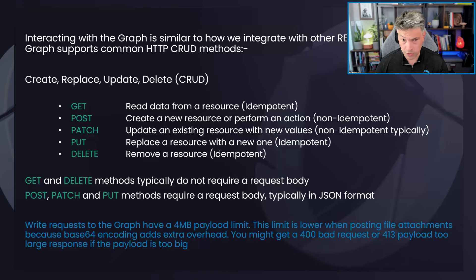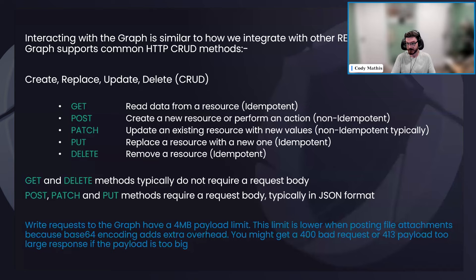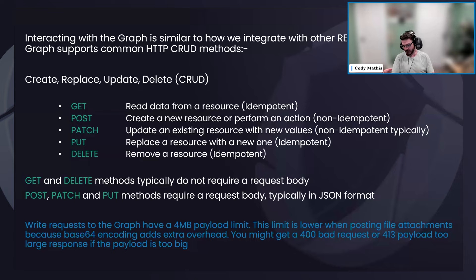PATCH updates an existing resource or specific values on a resource. PUT replaces a resource entirely in the Microsoft Graph. DELETE removes a resource. These are standards — there are ISO standards that define what these should look like, though whoever is presenting these APIs can make them do whatever they want. For example, a GET doesn't have a body, but you can still provide information like filters or sort properties via the URI.